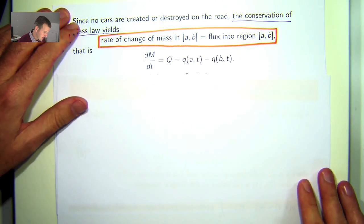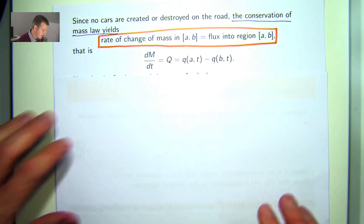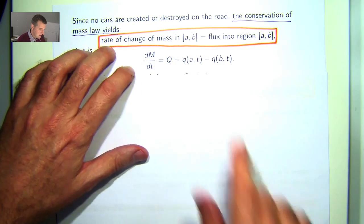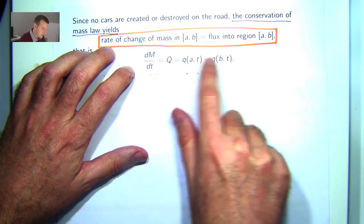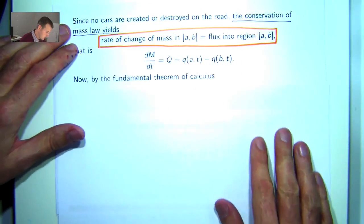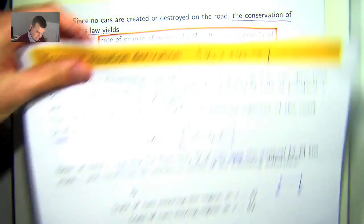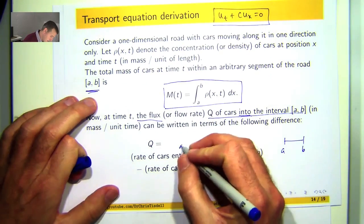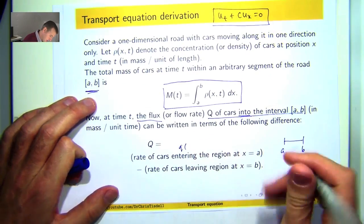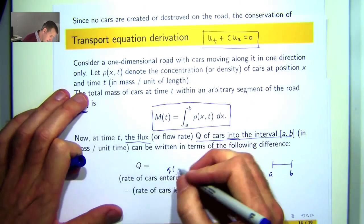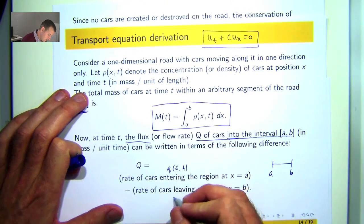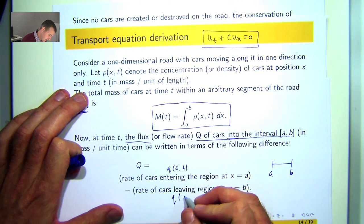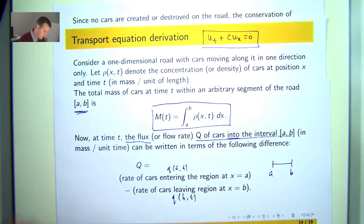So what that is, if m is the mass, then dm dt is just the following difference where this little q is this term, this is q, this is q.